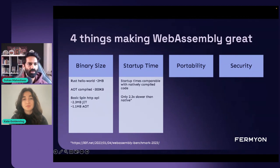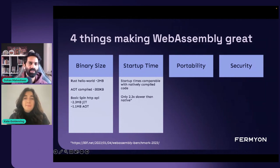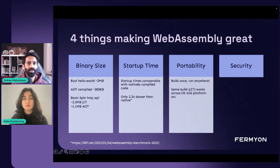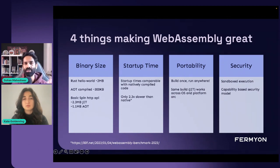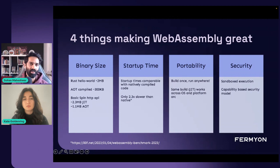The trade-off is startup time, which is comparable with natively compiled code. In a recent benchmark, it's about only 2.3x slower than native code startup. The other good thing is it's completely portable — you can build the code once into a WASM file and run that anywhere. That same build works across different operating systems and platform architectures. The default security sandbox applies to any WASM app, so it's a capability-based security model where you explicitly have to give your app permissions for anything to access it.